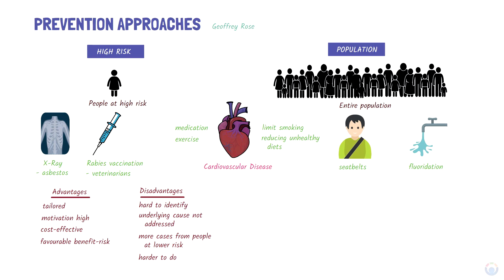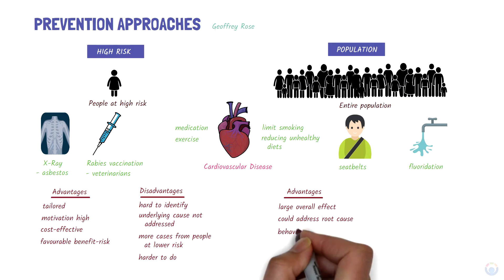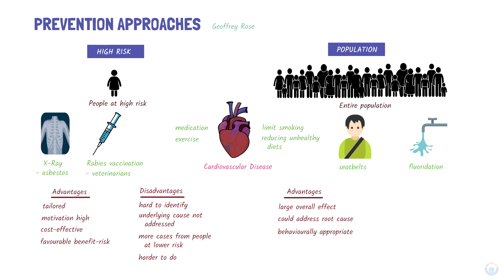In the population approach, the advantages are that a small change across the entire population can have a large overall health effect, it has the potential to address the root cause of health problems, and interventions are behaviorally more appropriate for an individual because they apply to everyone. For example, if non-smoking becomes the social norm, it becomes easier for a person to stop smoking. Also, because the interventions are delivered to everyone, it promotes health equity.